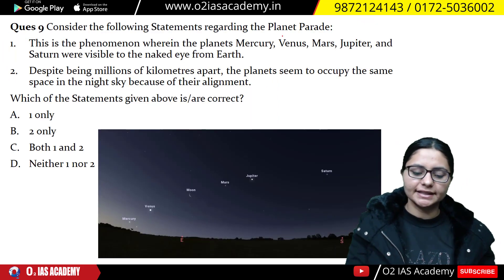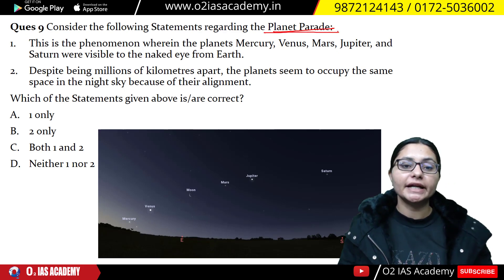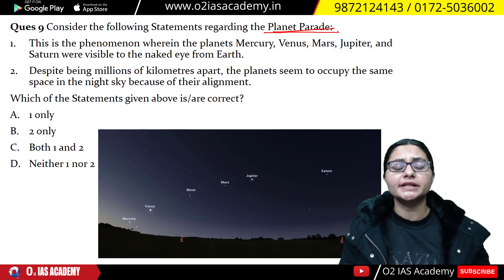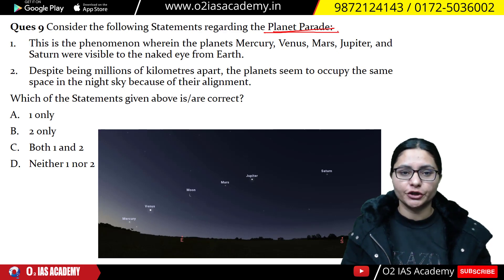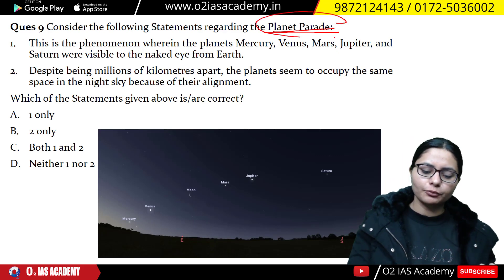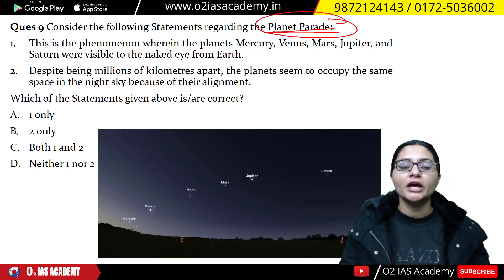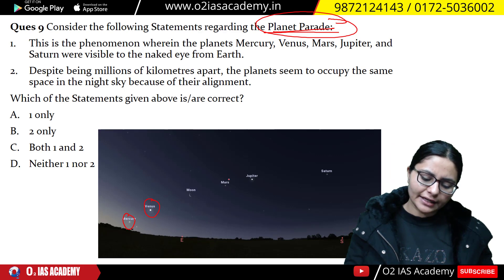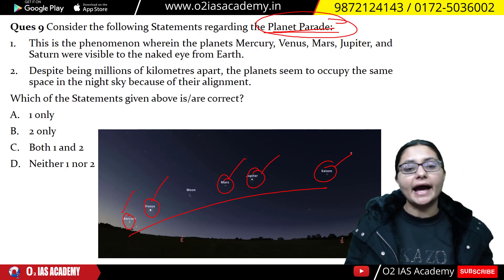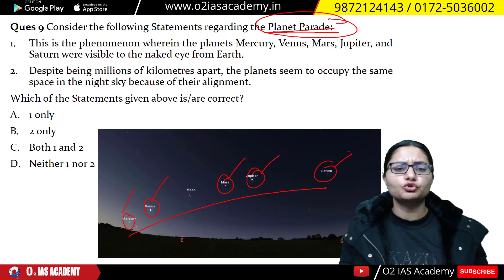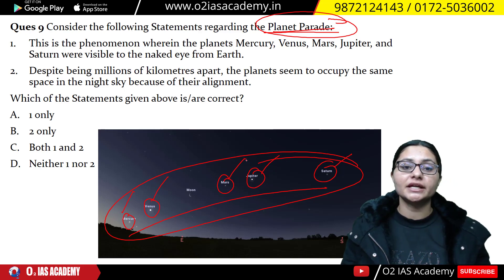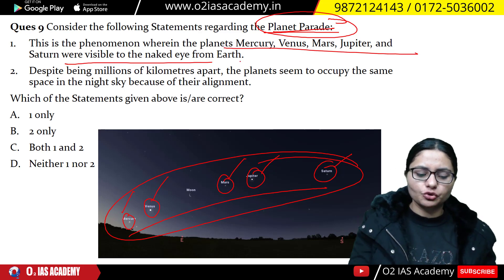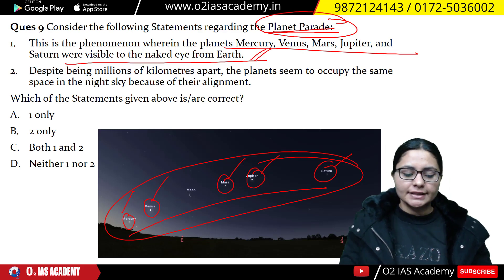The next question is related to planet parade. As you have seen in the newspapers, Venus and Saturn were appearing close together in the night sky. Regarding this, the term 'planet parade' refers to when, after sunset, you get to see different planets in one line in the night sky. For example, Mercury, Venus, Mars, Jupiter, and Saturn can all be seen. Venus and Saturn were close together, but that alone was not a planet parade. A planet parade is when different planets can be seen with the naked eye from the Earth in alignment.